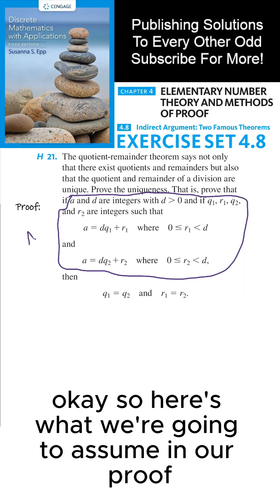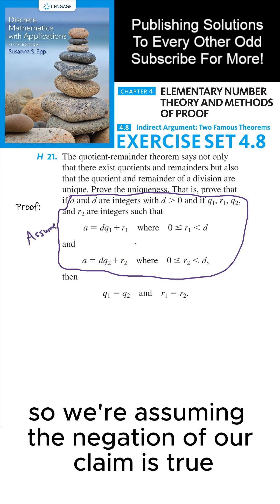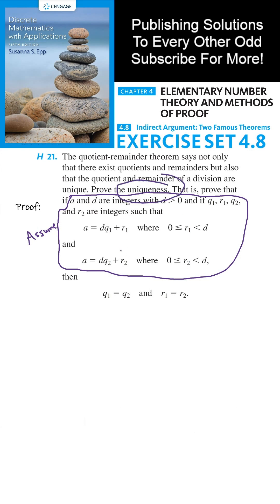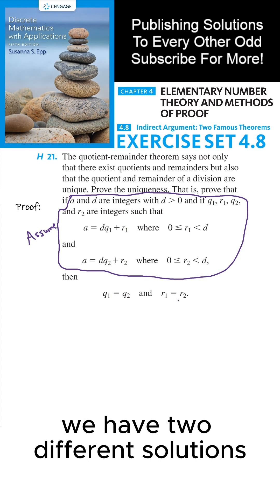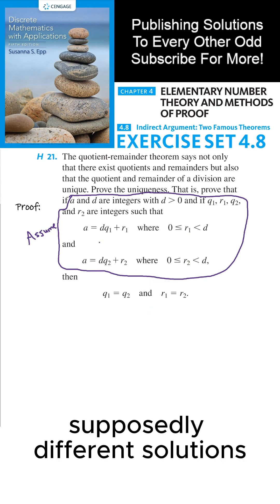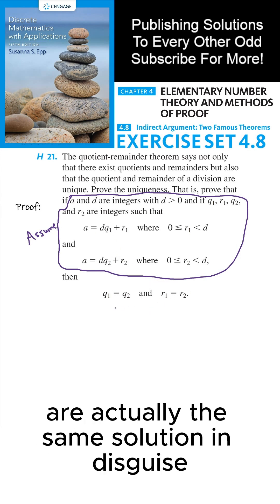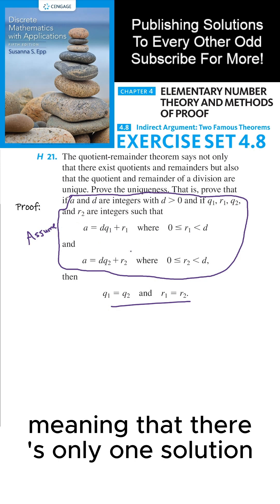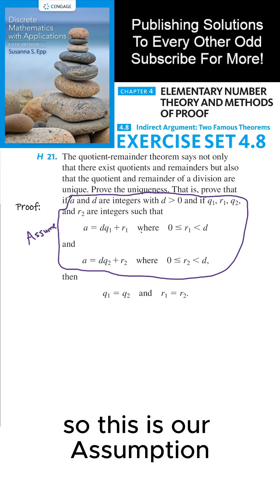So here's what we're going to assume in our proof. This is a proof by contradiction, so we're assuming the negation of our claim is true. That in fact we have two different solutions, and at the end we're going to contradict ourselves by showing that these two supposedly different solutions are actually the same solution in disguise, meaning that there's only one solution and not two.